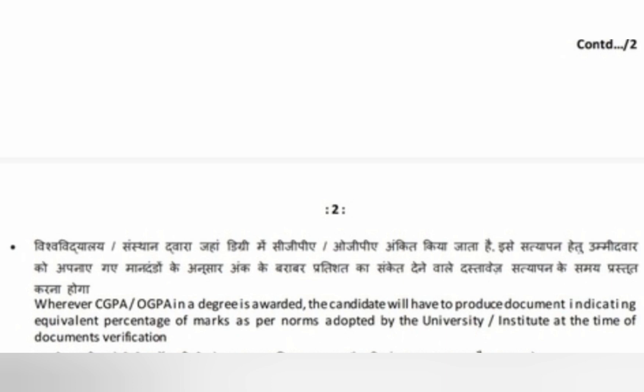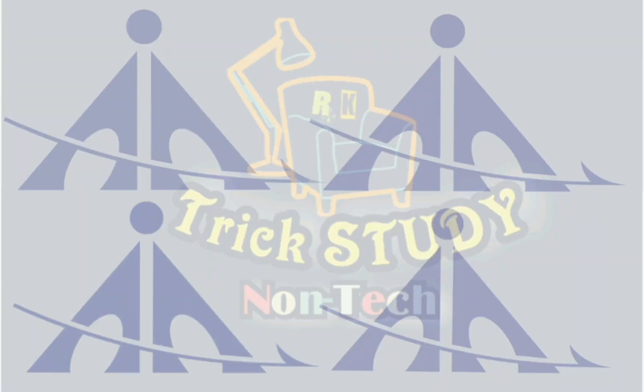Whenever CGPA in a degree is awarded, the candidate will have to produce a document indicating equivalent percentage of marks as per norms adopted by the university or institute at the time of document verification. Toh aap logon ko CGPA conversion ki document bhi de jaani padegi. Next chalte hain caste certificate ke upar — OBC, NCL, ST, SC etc.